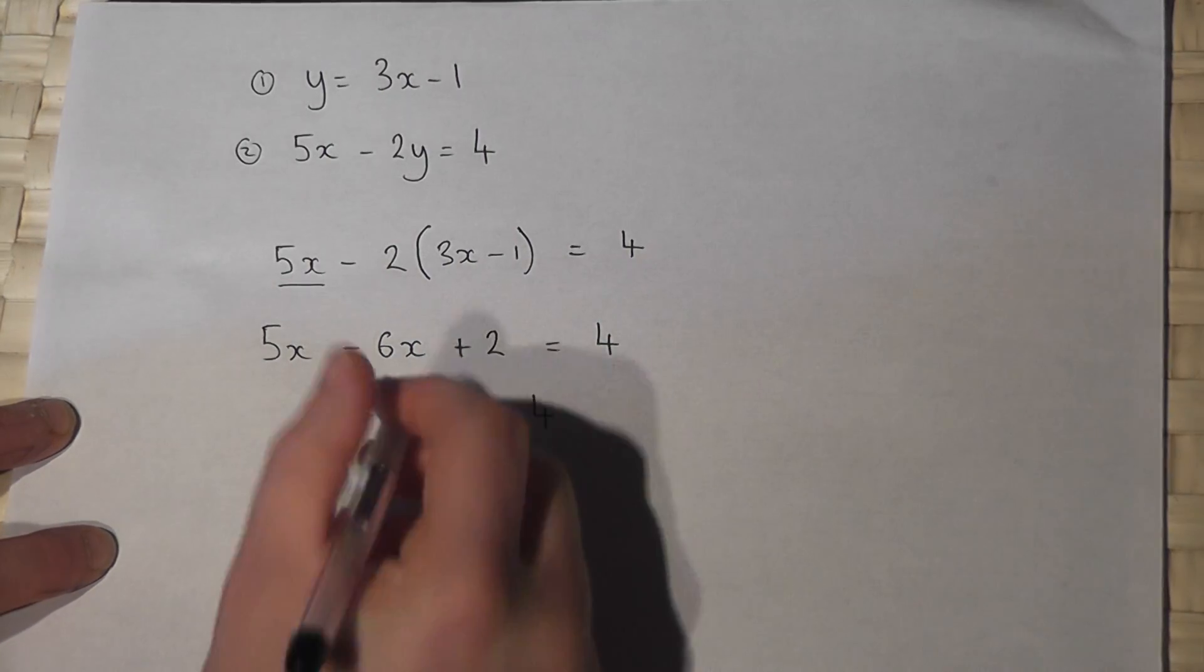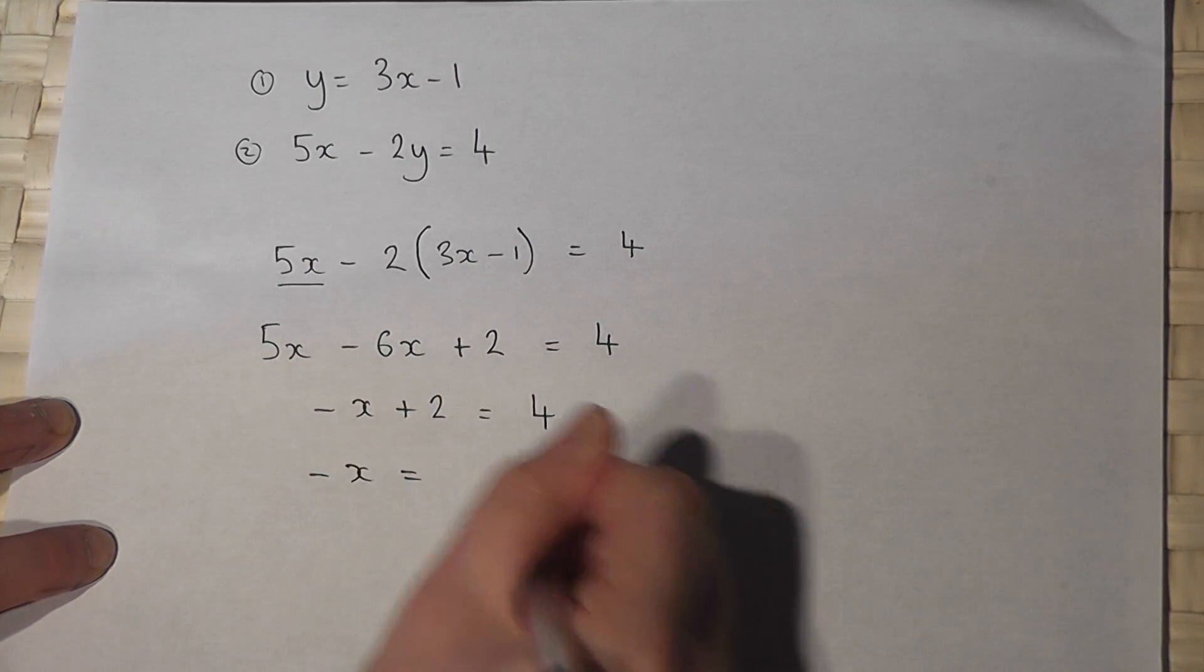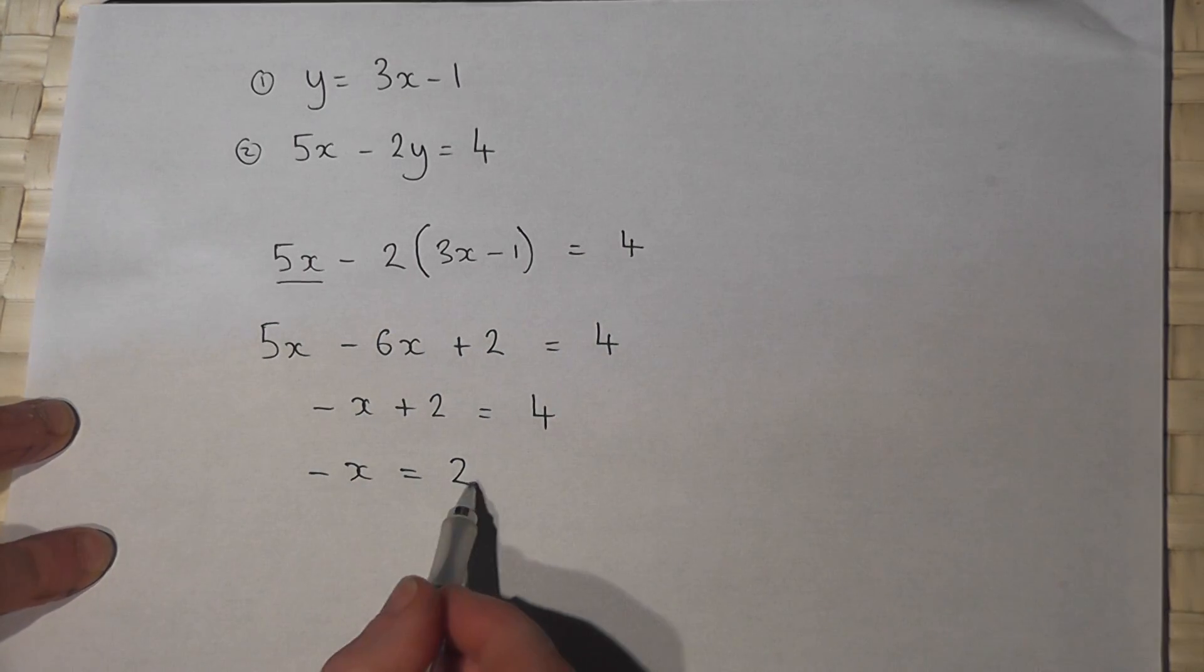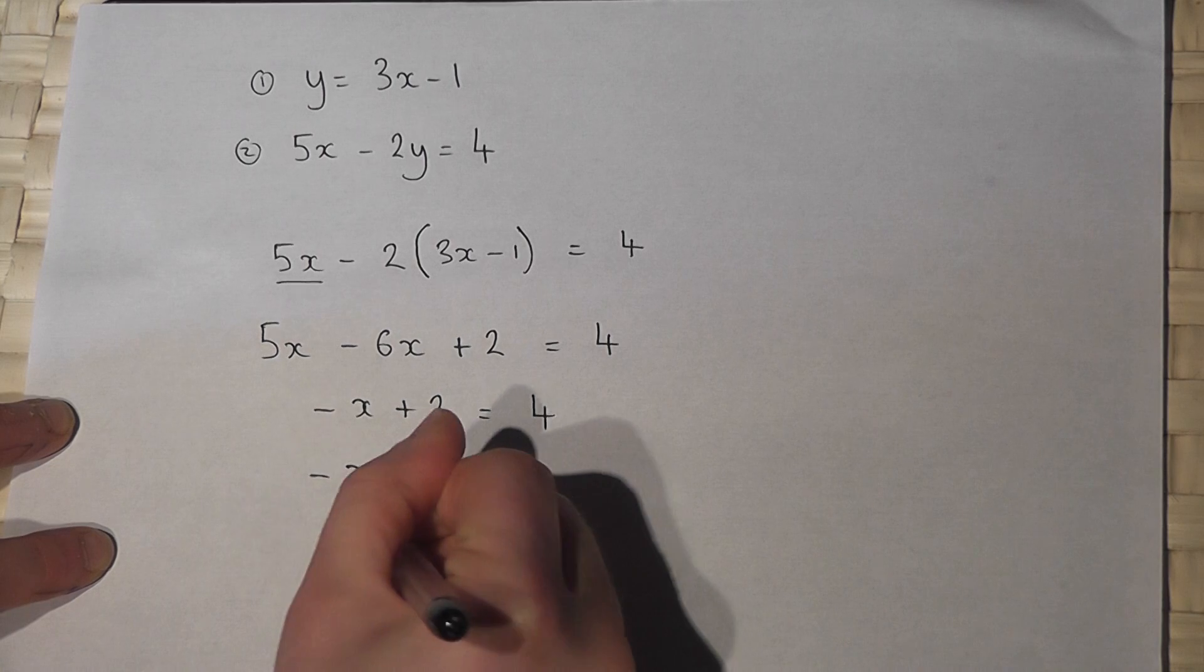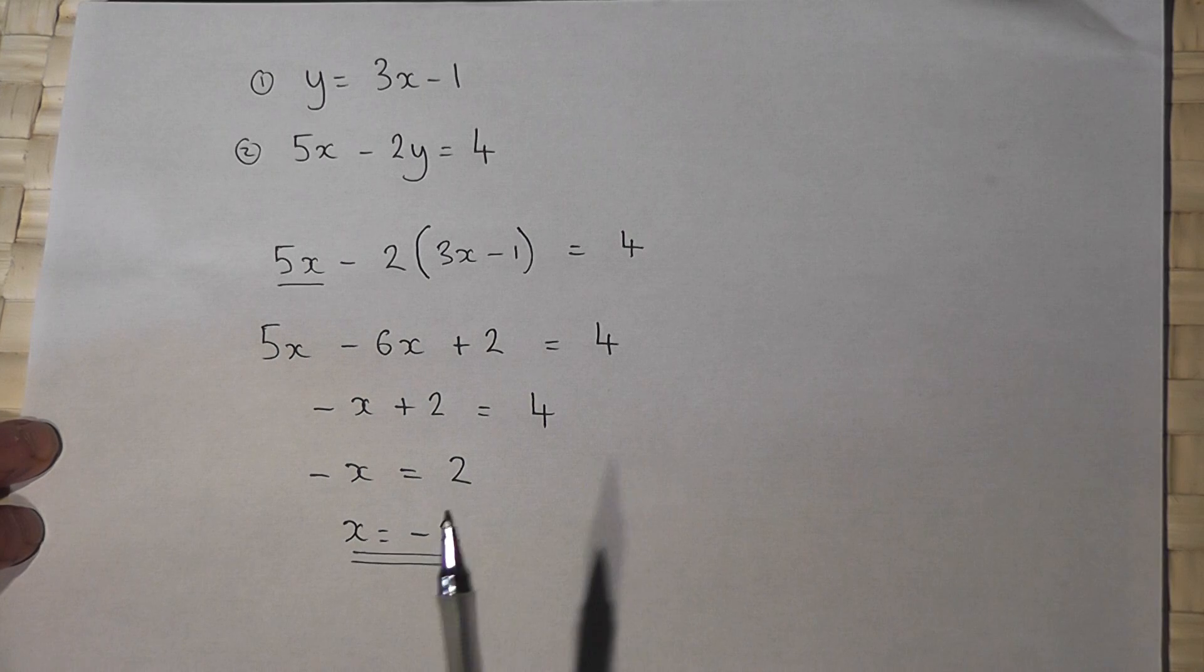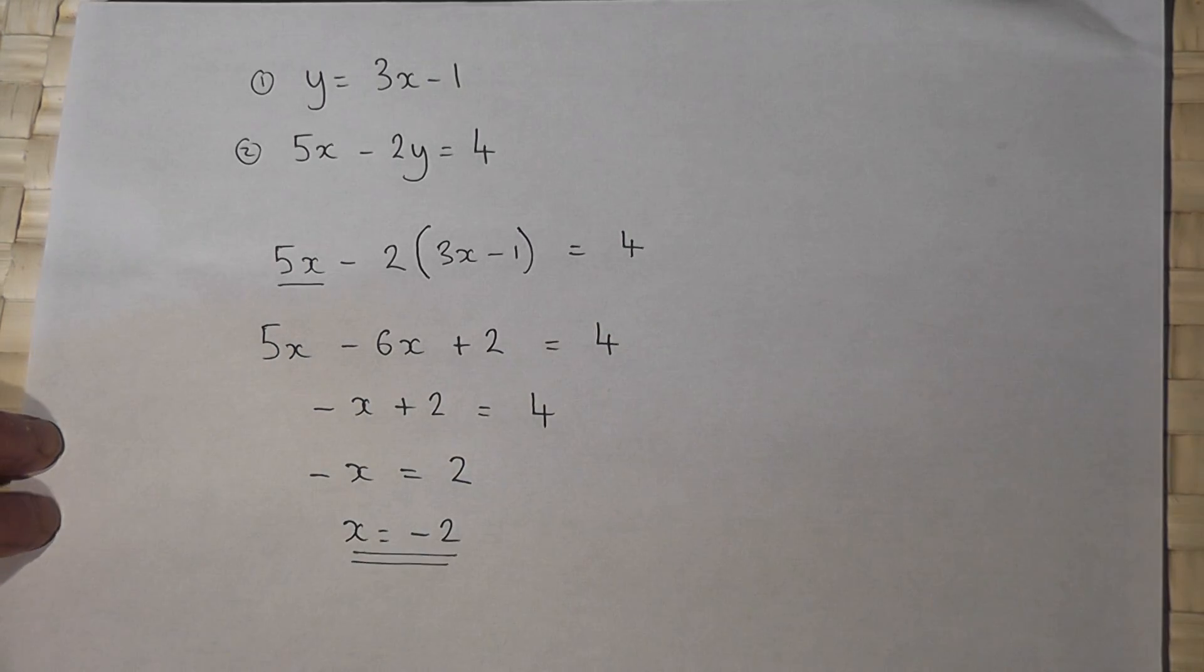I can take away 2 to the other side. So 4 take 2 is 2. So if minus x equals plus 2, then x just equals minus 2. So the value of x which satisfies both equations is minus 2.